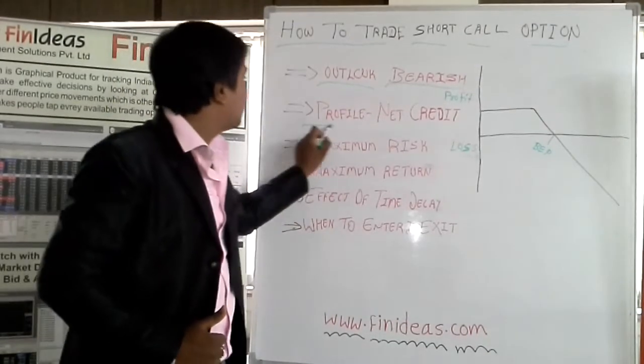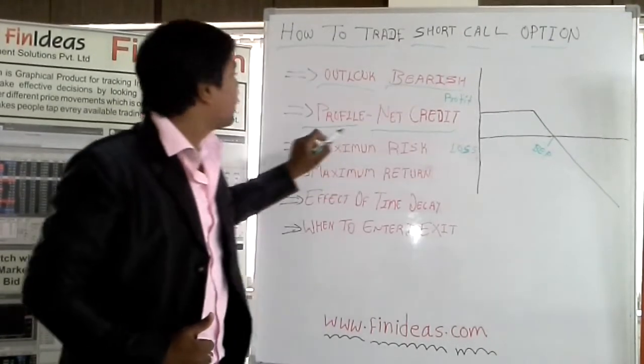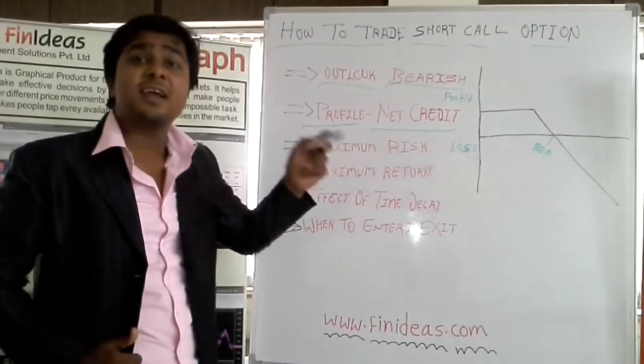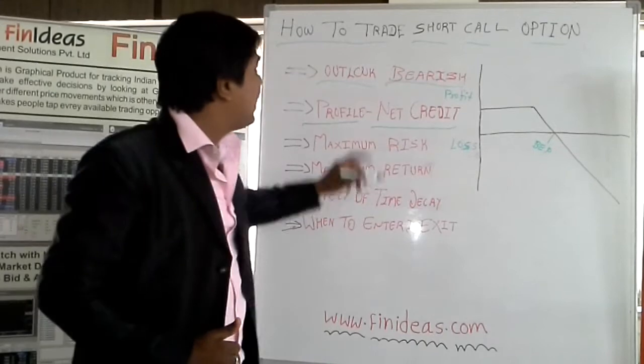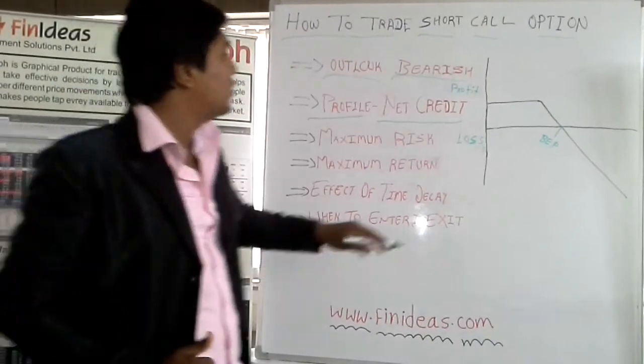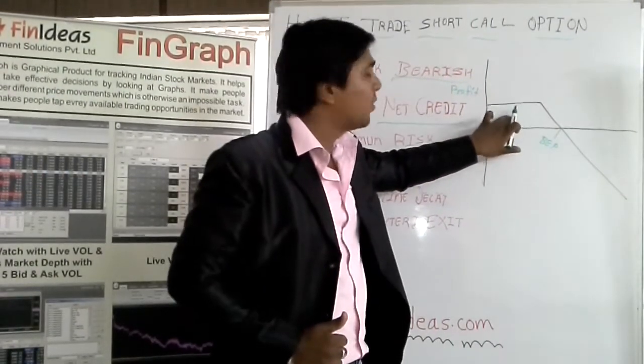If you are having a call short option, your profile will be having net credit. That means you will receive premium by selling call option. Your profile chart will look like this.